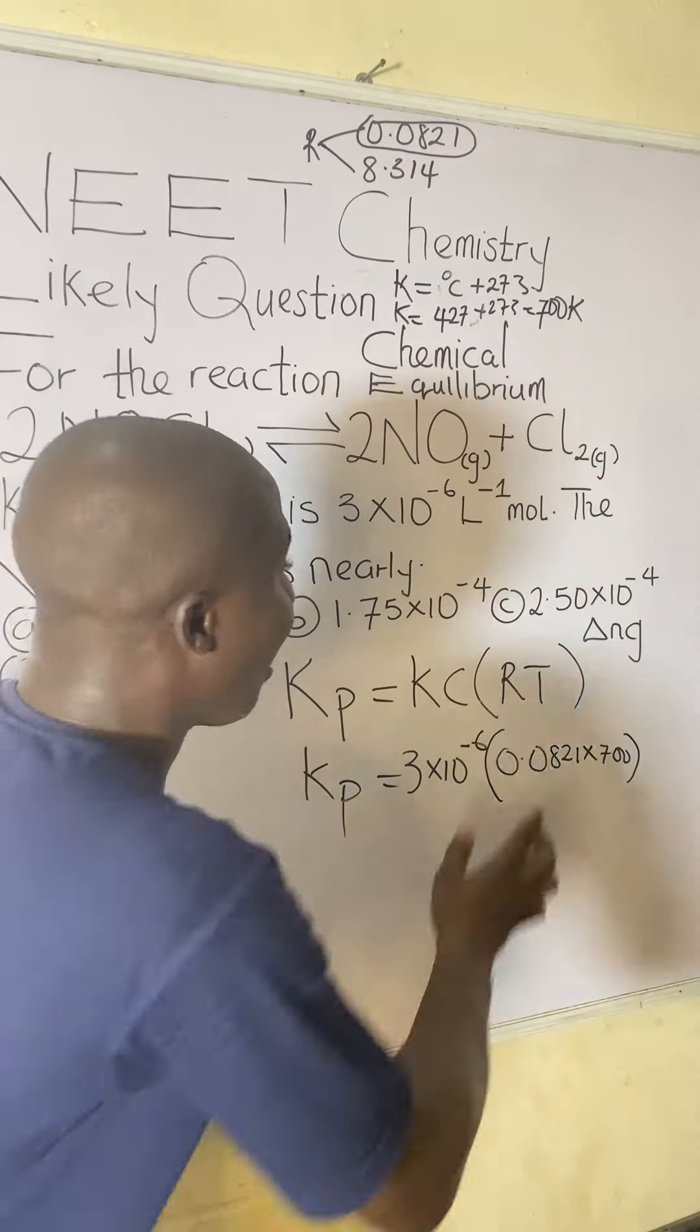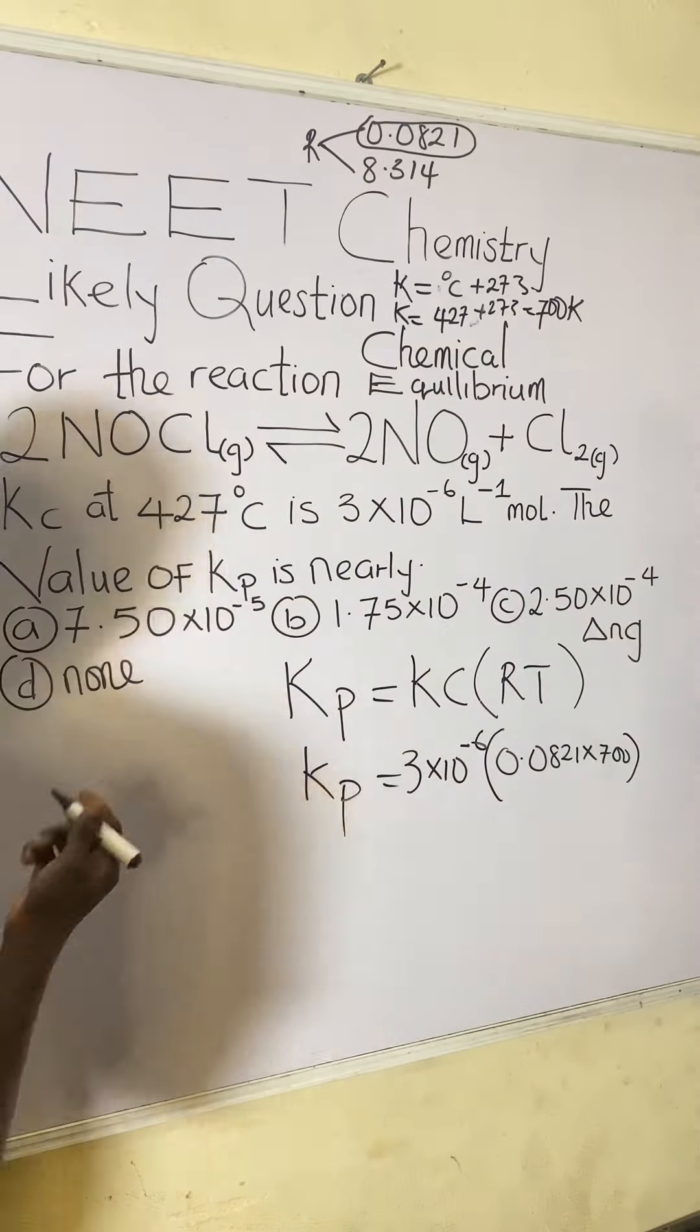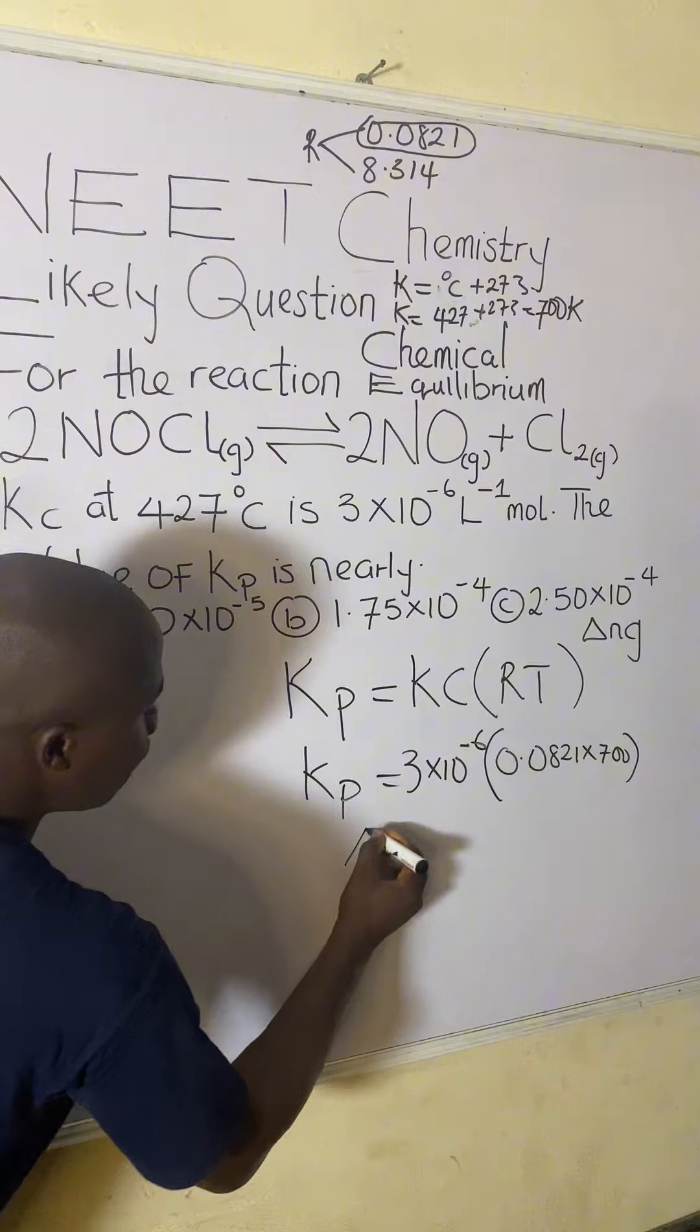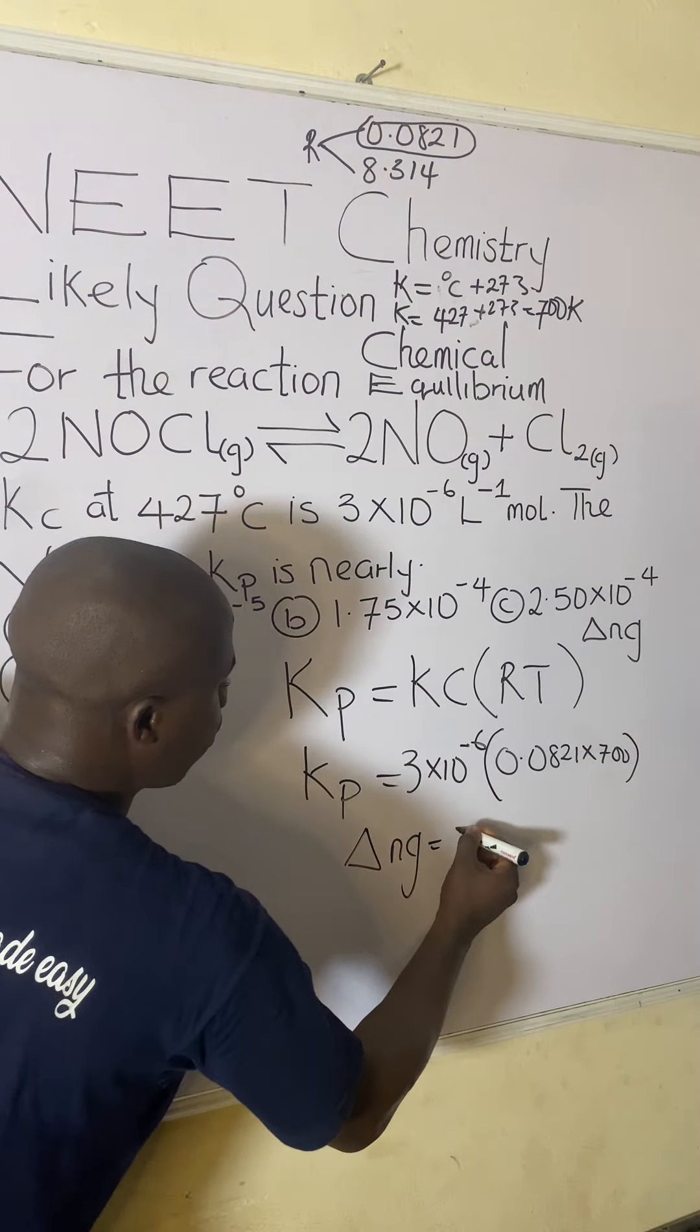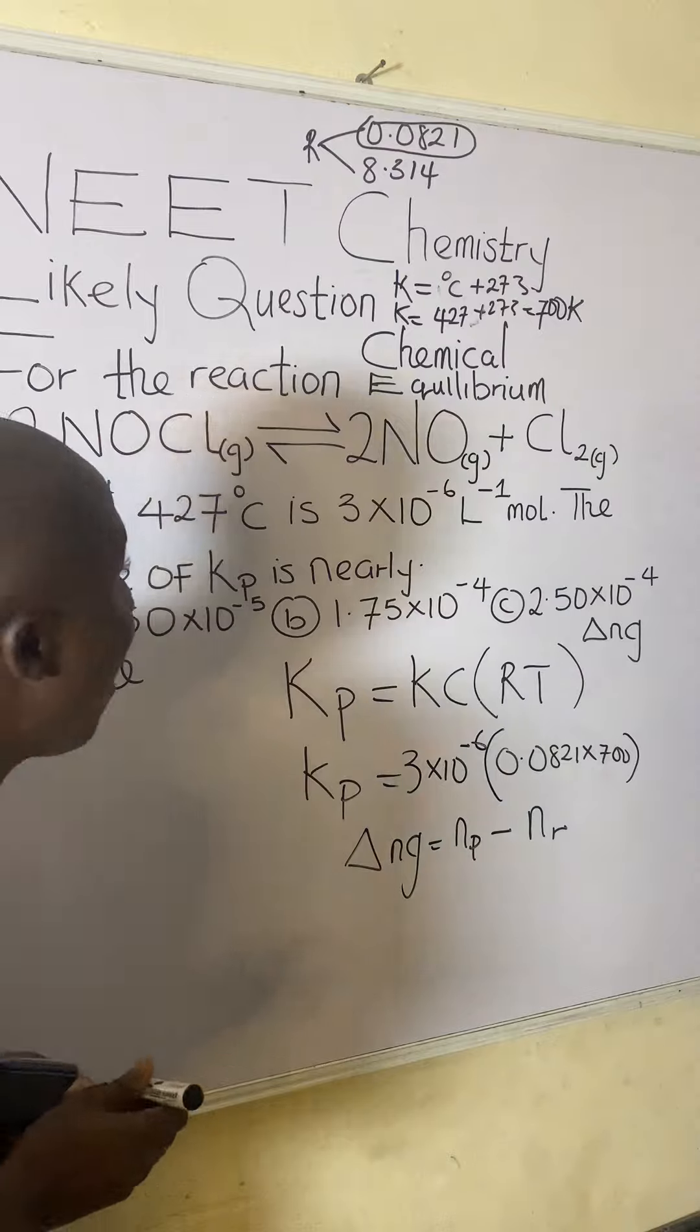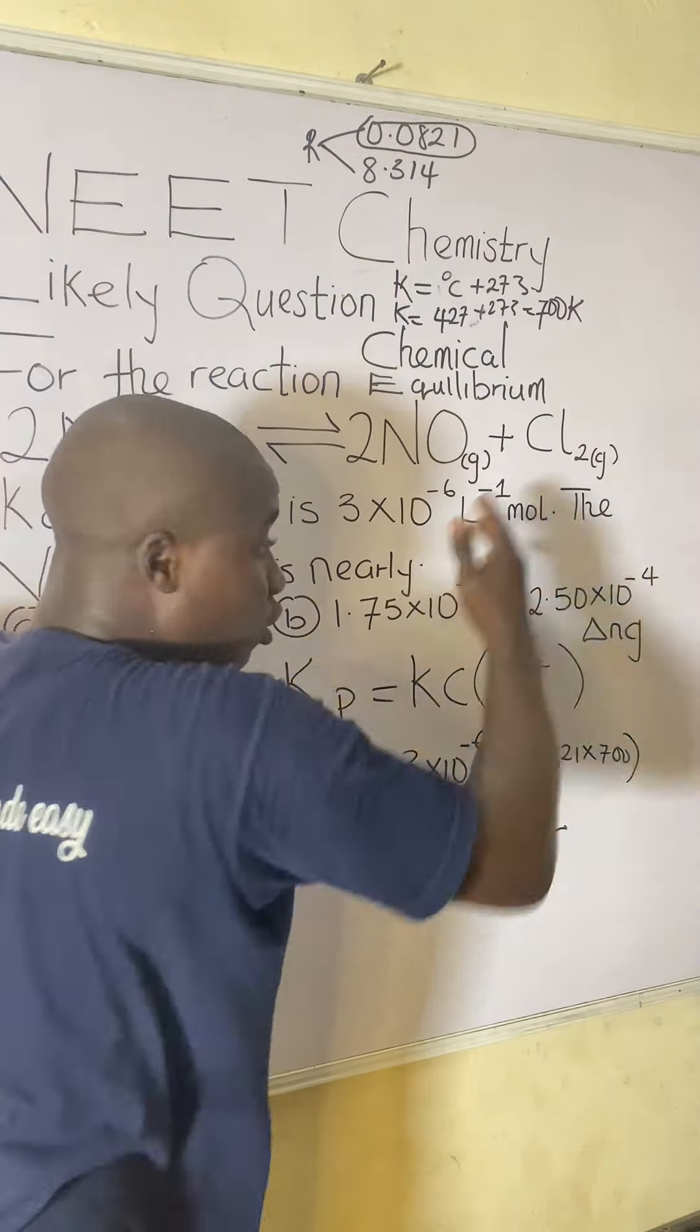So moving further, how do we get the change in the numbers of moles of the gases? Watch. Now, it's very easy. We simply come in and solve for the change in the number of moles of the gases. Change in numbers of moles of the gases is equal to numbers of moles of product minus numbers of moles of reactant. Now, here is the reaction. It has two sides. This is the product side, and as well, this is the reactant side.